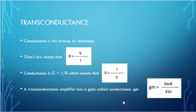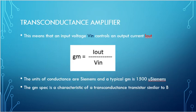A transconductance amplifier has a gain called conductance GM. Conductance GM equals the output current divided by the input voltage. This means that an input voltage Vin controls an output current Iout. We have our conductance equal to the output current over the input, so a little input voltage controls a lot of output current.